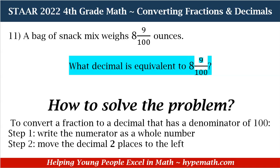Since we know that, how do we solve the problem? In order to convert a fraction to a decimal that has a denominator of 100, there are two things we need to do. Step 1, we're going to write the numerator as a whole number — our numerator is the top number, which is the 9. And then, Step 2, we're going to move the decimal place of the 9 two places to the left. This is kind of like a hack of dividing 9 by 100. A quick way — and this goes for any 10 values, so 10, 100, 1,000, 10,000 — you can do the same thing. You basically look at the number of zeros that you have, and that is how many places you're going to move to the left when you're trying to convert a fraction to a decimal.